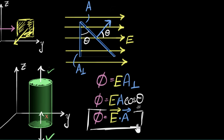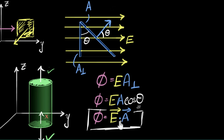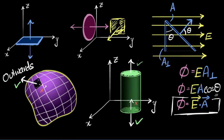This is so much easier to communicate. Flux is E dot A — that's it. Even when dealing with complex situations where electric fields and areas are oriented in different directions in three dimensions, taking a dot product is so much easier. So flux equals E dot A.